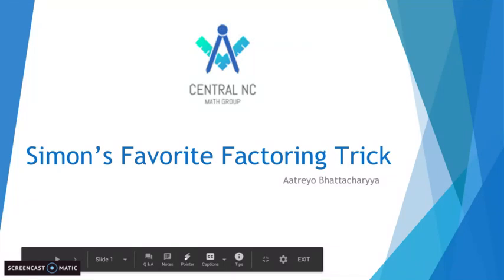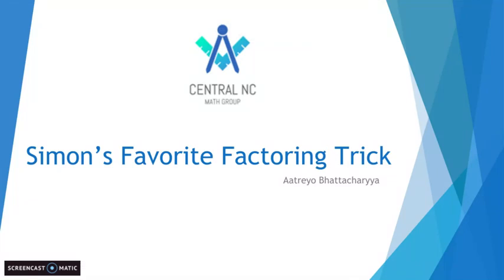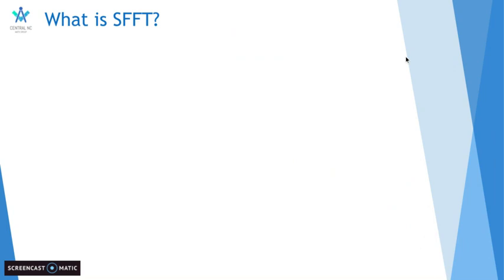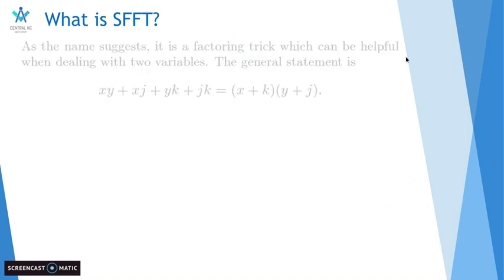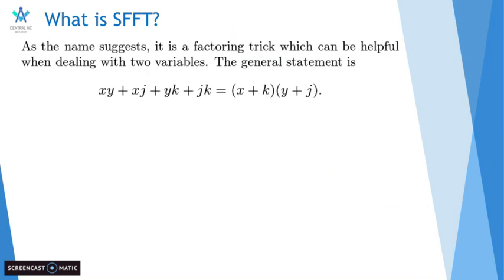Today's lecture is going to be on Simon's favorite factoring trick. So what is Simon's favorite factoring trick? As the name suggests, it is a factoring trick which can be very helpful when dealing with two variables. The general statement is xy plus xj plus yk plus jk equals x plus k times y plus j.